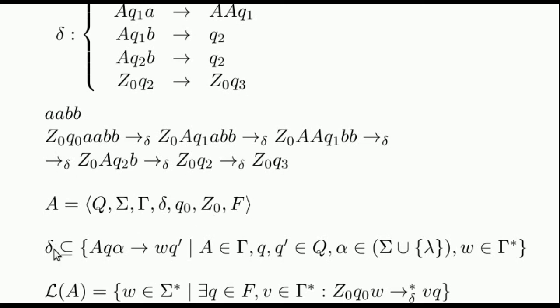The left-hand side of the transition rules have a stack symbol, followed by a state, followed by an input symbol or lambda. In the latter case, we will call it a lambda transition. The right-hand side of the rules have a word over the stack's alphabet, followed by a state.